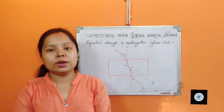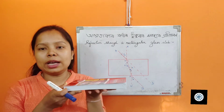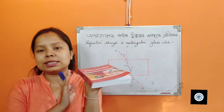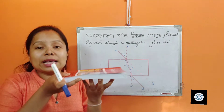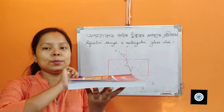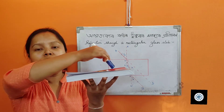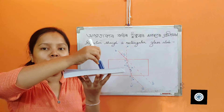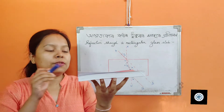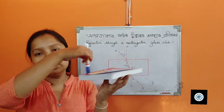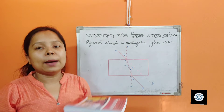Refraction through a rectangular glass slab. When a ray of light falls on the rectangular-shaped glass slab, first refraction will take place at this surface, then it will go through the glass slab, and at last, the refraction will take place at the second surface, and it will come out.